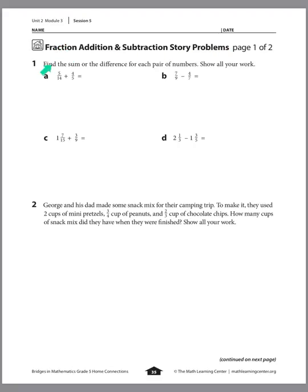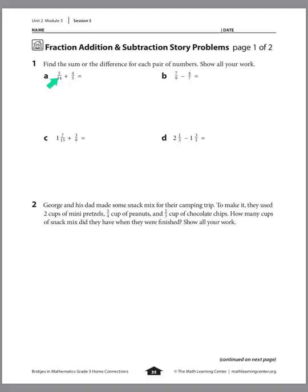Number 1 says find the sum or the difference for each pair of numbers. Show all your work. For part A, we see 5/14 plus 4/5. When we add and subtract fractions, we need to find the common denominator — we need the denominators to match.